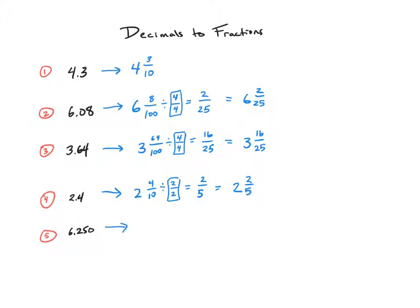And lastly, six and two-hundred-and-fifty thousandths is six and two-hundred-and-fifty over one-thousand. Two-hundred-and-fifty over one-thousand is definitely not in simplest form. I can pull out quite a bit.